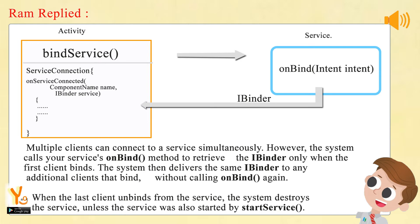Multiple clients can connect to a service simultaneously. However, the system calls your service's OnBind method to retrieve the IBinder only when the first client binds; the system then delivers the same IBinder to any additional clients that bind, without calling OnBind again. When the last client unbinds from the service, the system destroys the service, unless the service was also started by StartService.